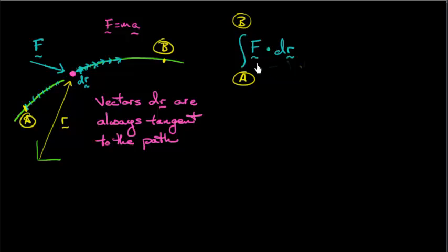So notice that the integrand, this thing I'm integrating is actually a scalar, even though it has two vectors in there. The dot product makes it a scalar. So I take the vector F, I take the dot product of that vector F with dr, it gives me a scalar, and I just keep on adding those together as I go from point a to point b along the curve.